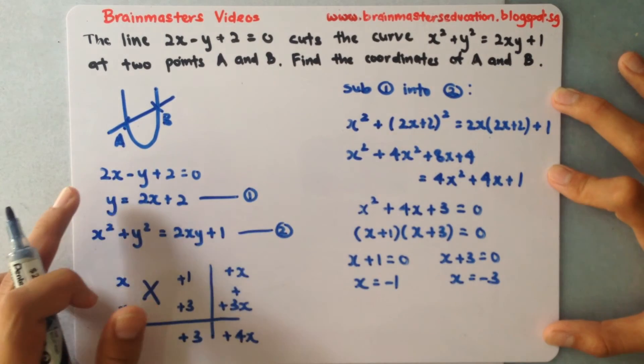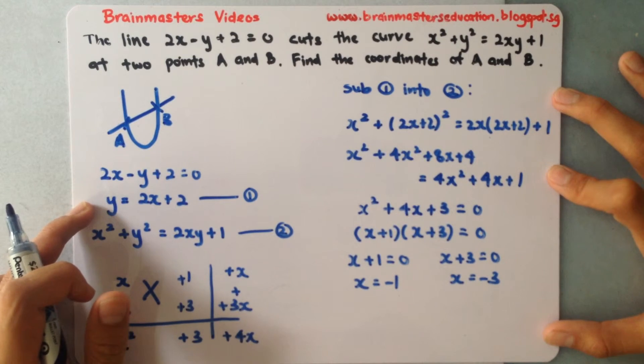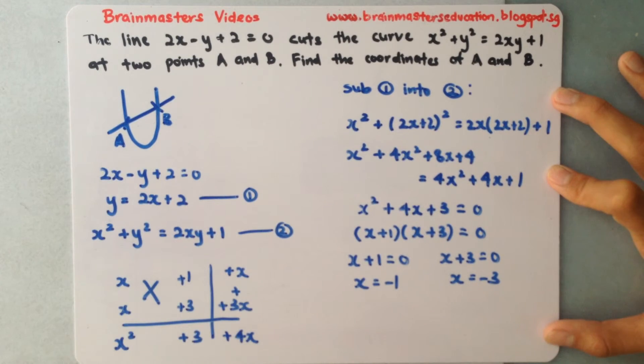So with this I can put it into my equation 1. Okay so what I can do is I'll be having my y equals to 2 bracket negative 1 plus 2. So I'll be able to find out that this will actually give me a 0.